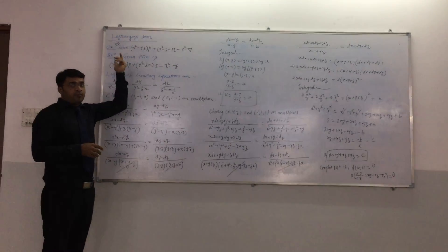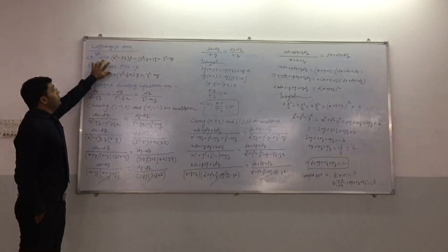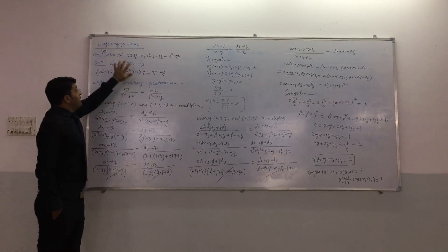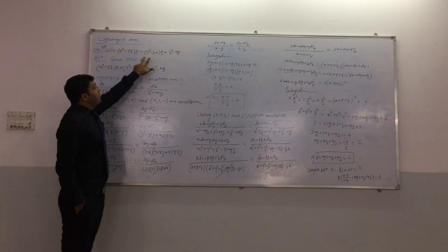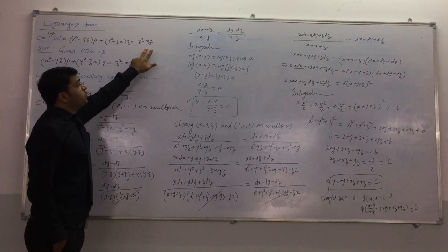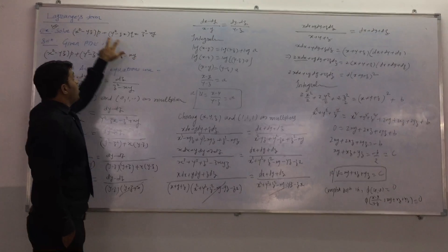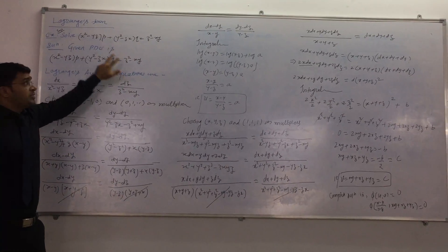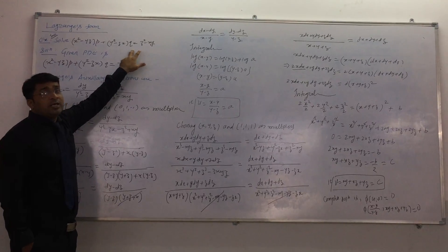The topic is Lagrange's form. We are having a very important and famous problem: x squared minus yz times p, plus y squared minus zx times q, equals z squared minus xy. Here, small p stands for del z by del x, and small q stands for del z by del y.